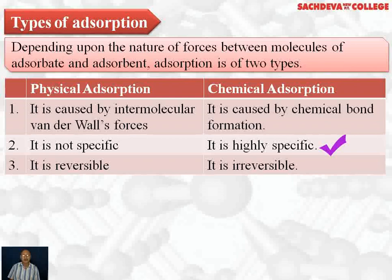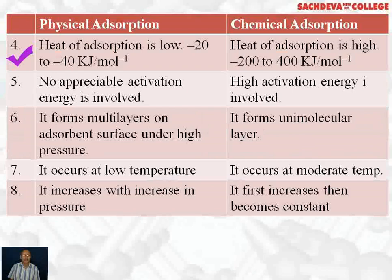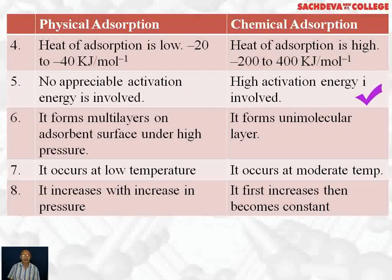For example, in Haber's process, nitrogen and hydrogen get adsorbed on the surface of iron, so it is highly specific in nature. Physical adsorption is reversible, whereas chemical adsorption is irreversible. In physical adsorption, heat of adsorption is low — 20 to 40 kilojoules per mole — because the force of attraction between adsorbate and adsorbent is less. In chemical adsorption, heat of adsorption is high — 200 to 400 kilojoules per mole. In physical adsorption, no appreciable activation energy is involved.